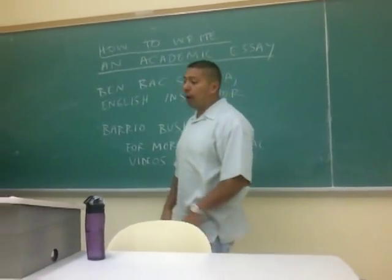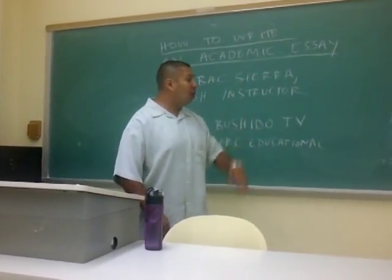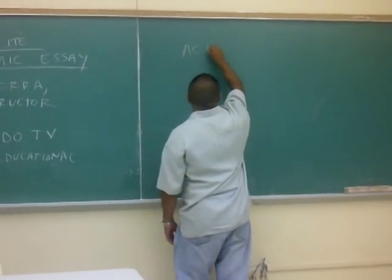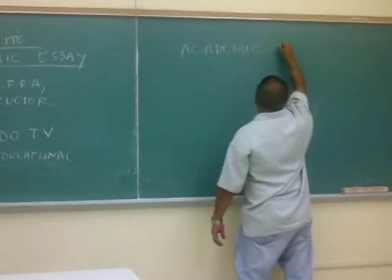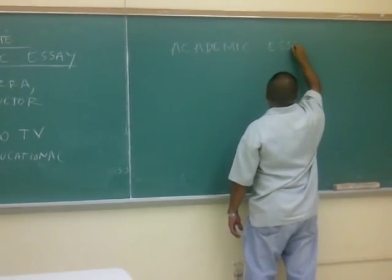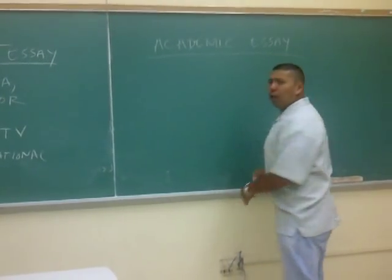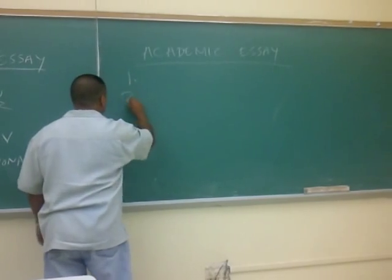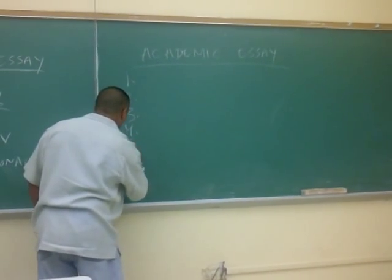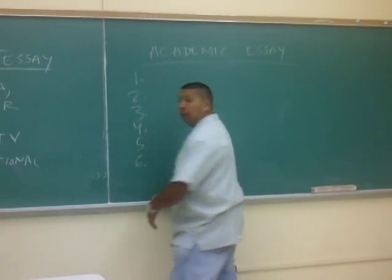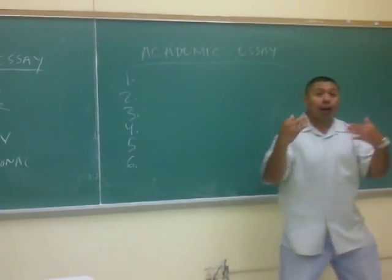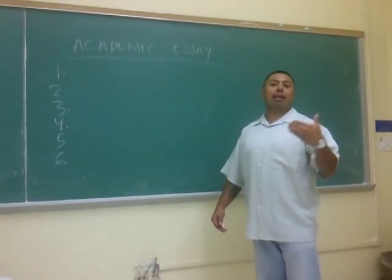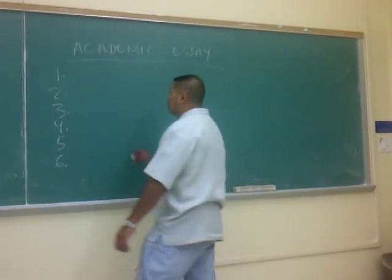Let's get right to it. The academic essay. There are six things generally that are required for an academic essay. Different instructors may call these things by different names. I'm going to use the names that I have used for the past 15 years. One: for an essay to be an essay, it must have an academic essay structure. We're going to talk about that structure here in a moment. First, I'm going to list all of these concepts.